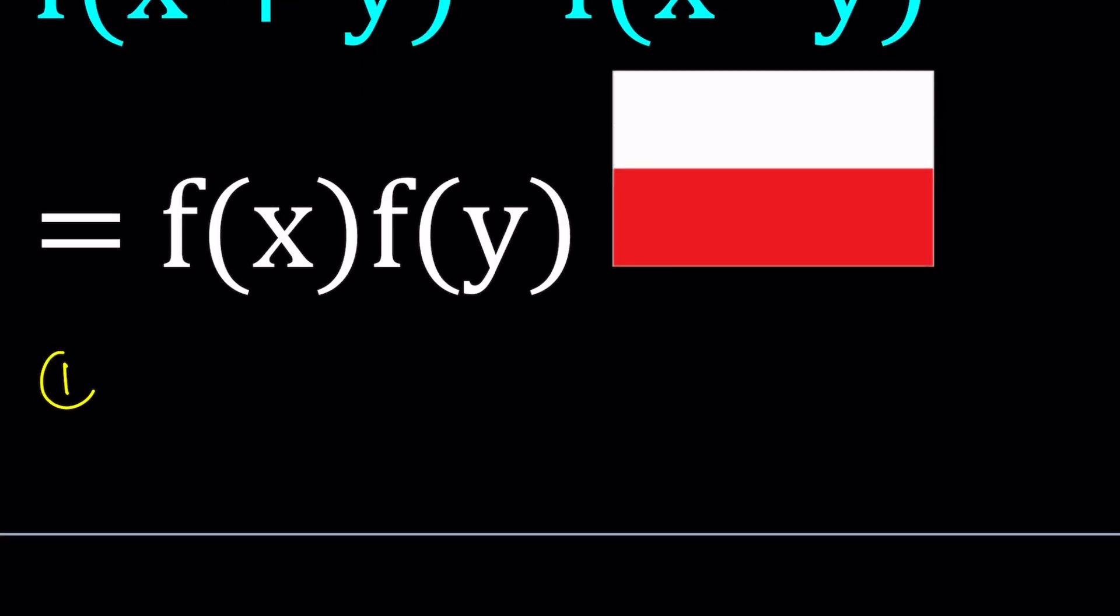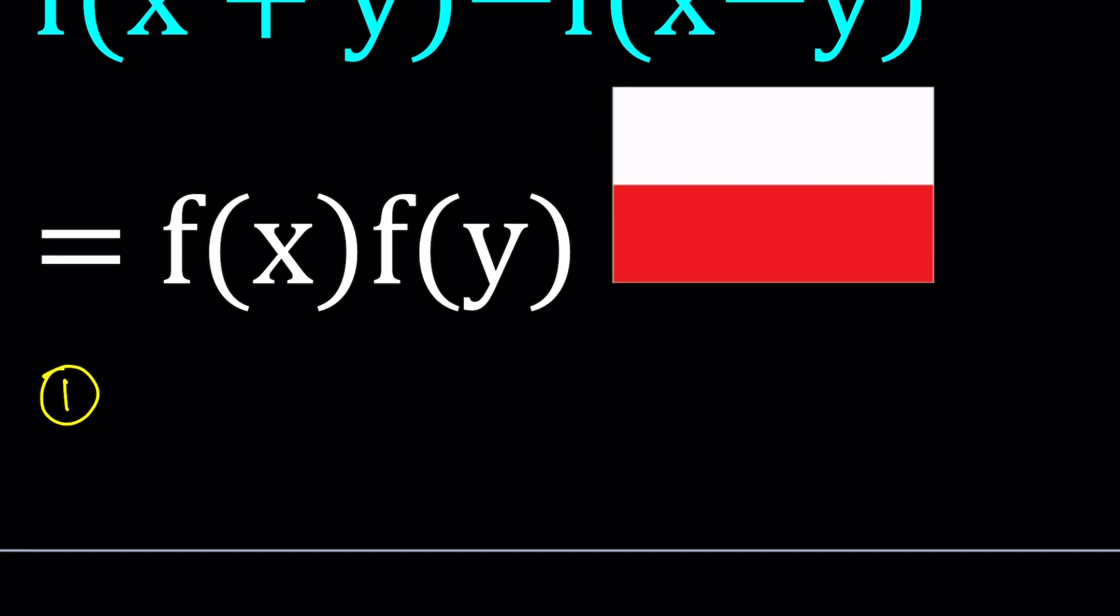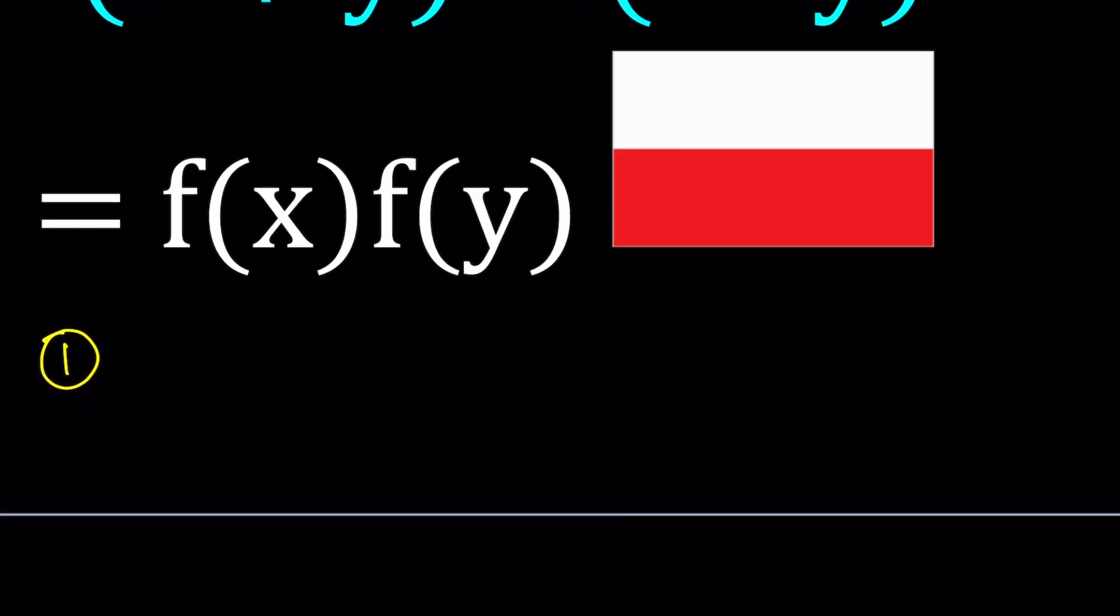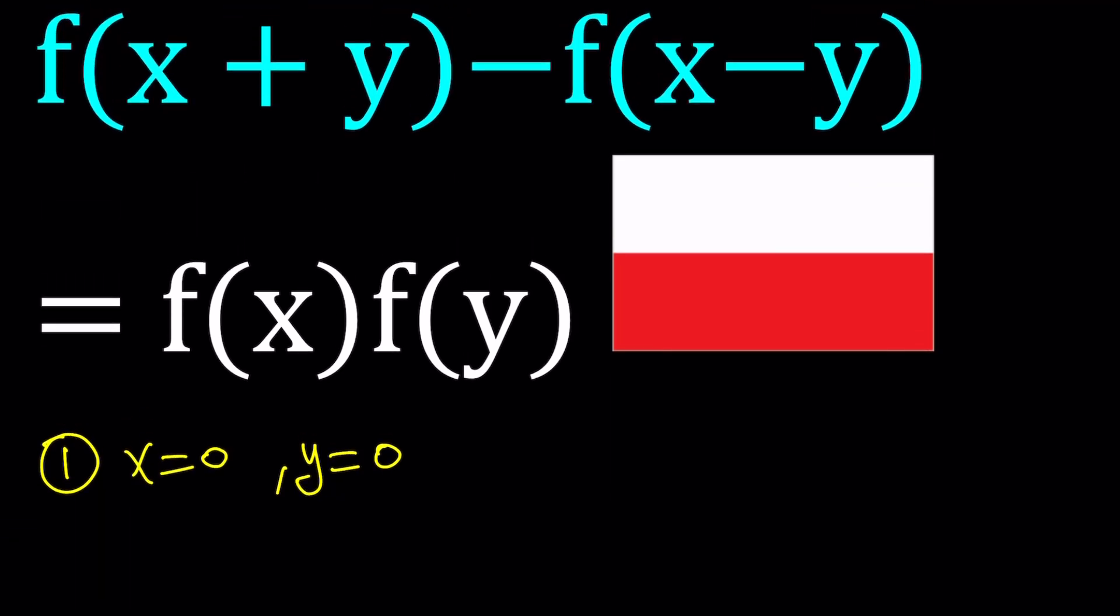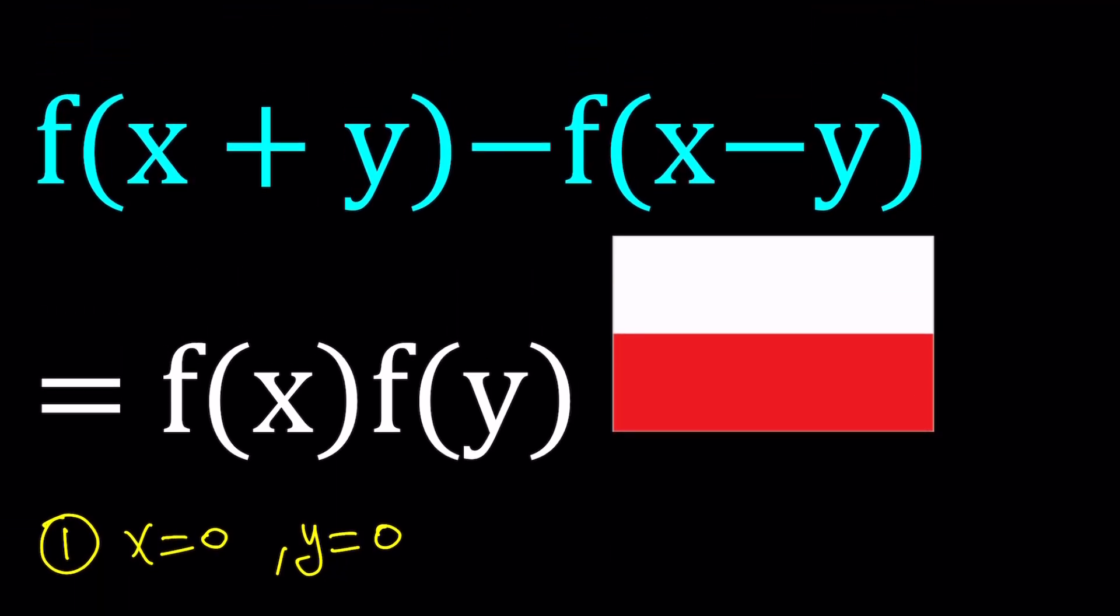First step, I'm going to replace x and y with 0. A lot of times when you're solving functional equations, you want to do this. Either replace both x and y with 0 or one of them with 0 because that's going to give you some specific special values which you can use later on. In some cases, it just gives you the solution. So it's worth trying.